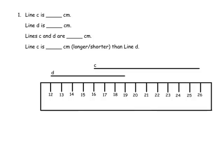So what's cool about this problem, it says line C is how many centimeters. What's really cool about this is I noticed that the ruler here does not start at 1. The ruler starts at 12 and it goes up. And the other thing I notice is that C, which is what we're being asked to do, doesn't line up with 0. It lines up with 16.